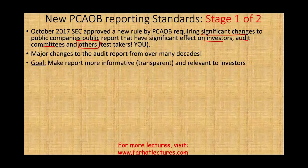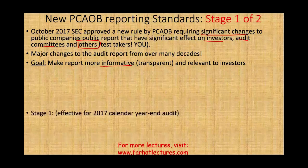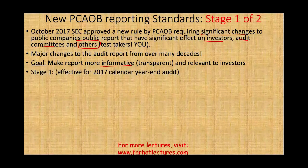So what is the goal? The goal is to make the report more informative, more specific, more transparent, and relevant to investors. Stage one will be effective for 2017 calendar year audits, so if you are a calendar year audit 2017, it means you're going to be audited maybe in 2018. Simply put, six months after a rule takes place, it will start to be tested on the exam. So expect those new rules for stage one to be tested pretty shortly.